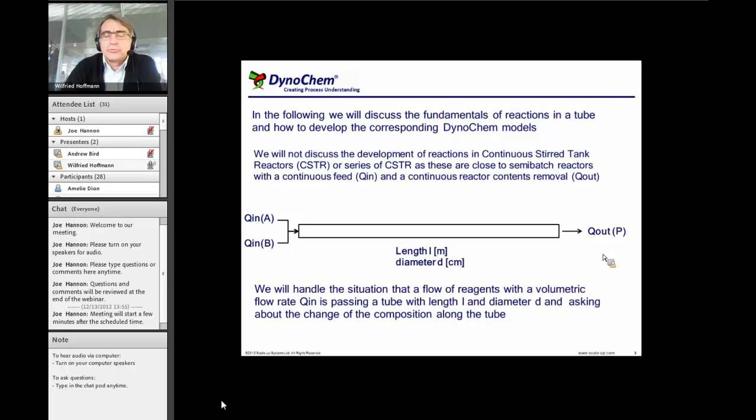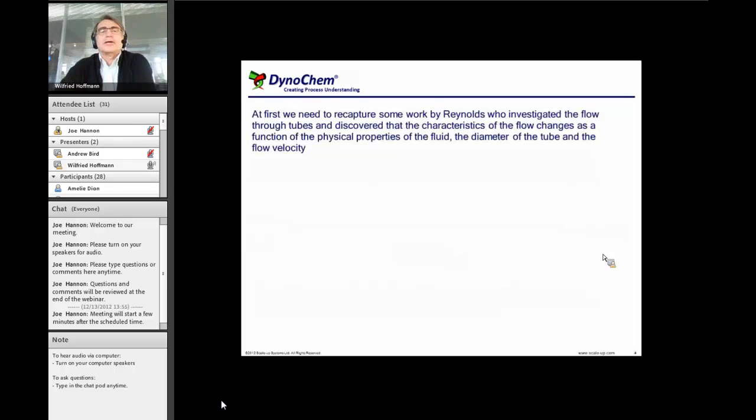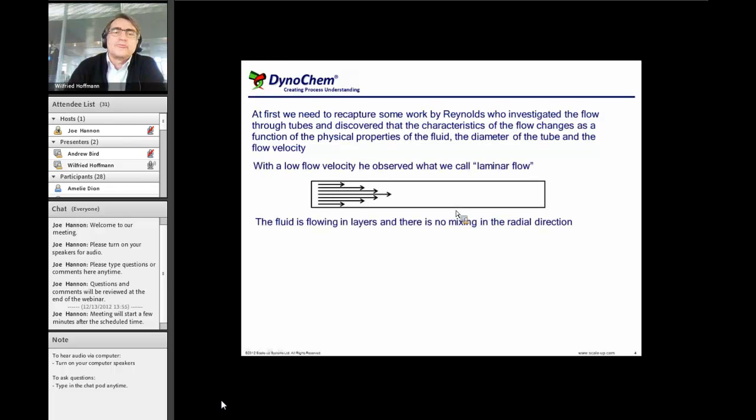What are the fundamentals and how we can capture these into DynoChem models. And in order to do this, we need to go back a little in history and look at the work by Reynolds who investigated the flow through tubes and discovered that the characteristics of the flow changes as a function of the physical properties of the fluid, the diameter of the tube and the flow velocity. And he observed that with low flow velocity, he observed what we call laminar flow.